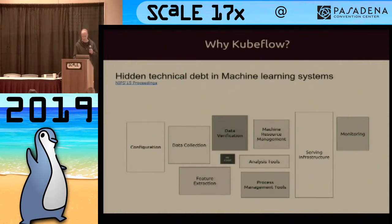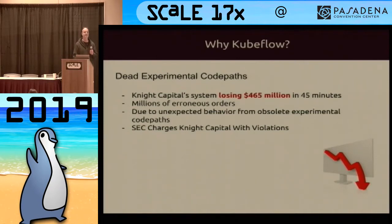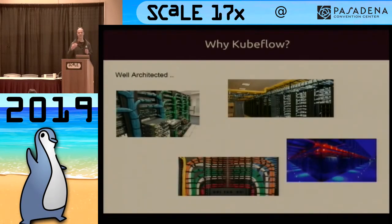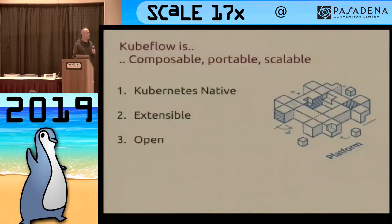Why is that a problem? Well, you could lose a lot of money. In that same article, it talked about one organization that lost half a billion dollars in 45 minutes — dead experimental code paths. How hard could it be to find dead experimental code paths? Well, if your code and all that other stuff looked like a mess of tangled cables, try finding the dead non-working one. In reality, what you want is something clean, and that's where Kubeflow comes in — it helps you build scalable systems that look a little more like that.